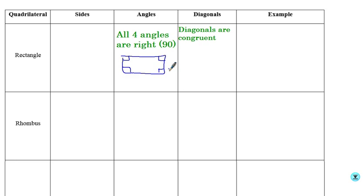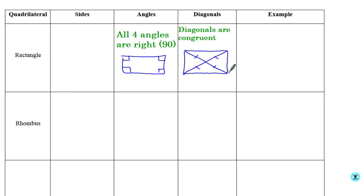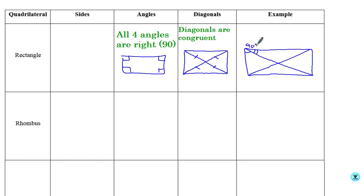The other property is that the diagonals are congruent. The properties from parallelograms tell us that the diagonals bisect each other, and now we also know that they are congruent to each other. So when they bisect each other, they're all going to equal the same amount — each of these little pieces is equal to the same thing. These two angles add up to 90 degrees, these are alternate interior angles so they're congruent, and the diagonal creates an isosceles triangle, so the base angles are congruent as well. Those are our properties of a rectangle.